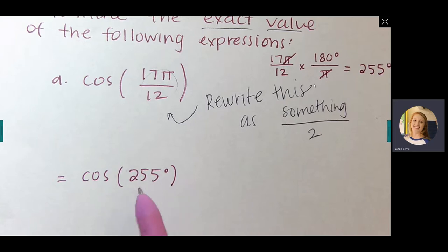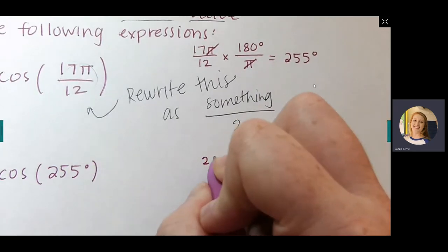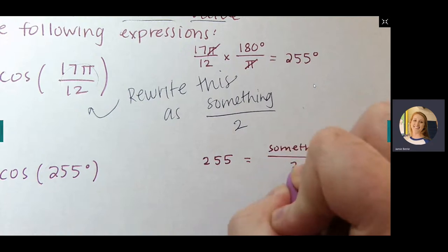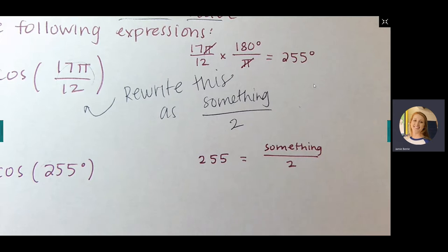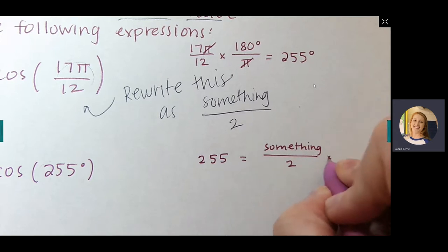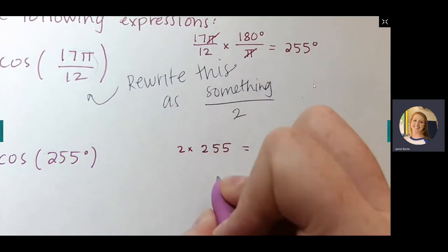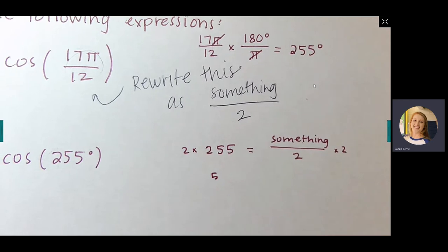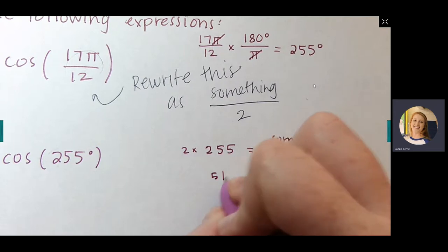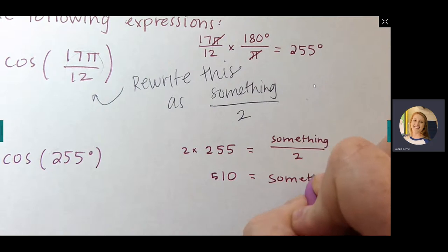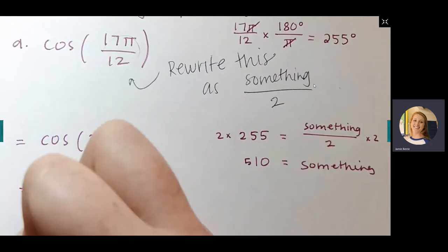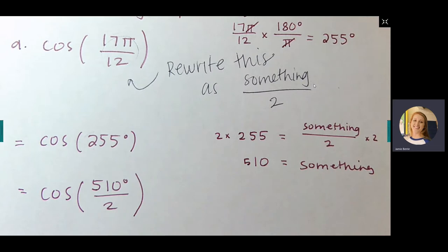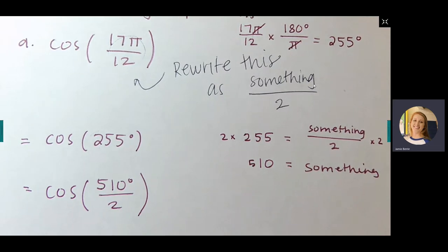We need to rewrite 255 as something over 2. Setting 255 = something/2 and multiplying both sides by 2 gives us 510. So we can write this as cosine of 510°/2. Now, 510 degrees is 360 + 150 — you go all the way around the unit circle and then 150 more degrees — so 510° corresponds to the same position as 150°.